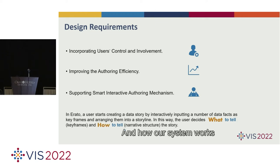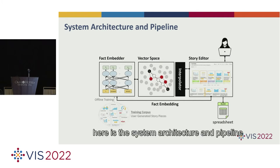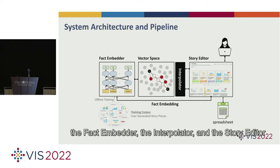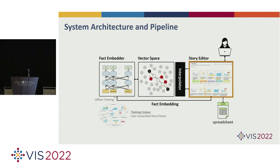Inspired by this, Erato fulfills the requirements through which the user only needs to focus on what to tell and how to tell the story. And how does our system work? Here is the system architecture and pipeline. It consists of three major components: the fact-embedder, the interpolator, and the story editor. We will cover each of them in turn.